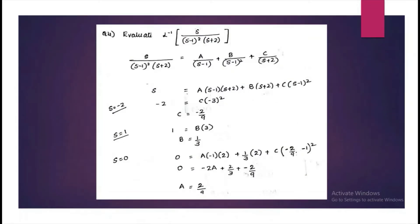For the next problem, write two terms on the right-hand side with denominators S minus 1 and S minus 1 the whole square. Had it been S minus 1 the whole cube, we would have one more term until that power is reached. Then add another term C by S plus 2. To find the three constants, substitute the roots: when S equals minus 2, A and B cancel, giving C alone. When S equals 1, A and C cancel, giving B. To get A, substitute S equals 0.